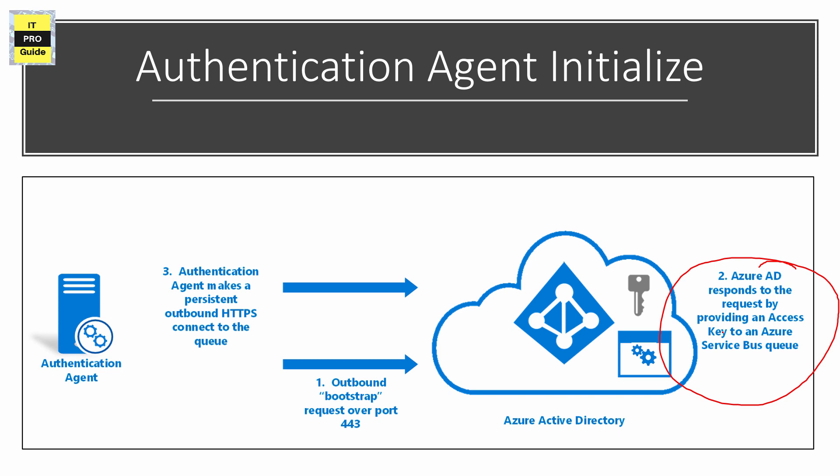Azure Active Directory responds by providing an access key to the Azure Service Bus that is unique to your tenant, identified by your tenant ID. The authentication agent installed on-premises then makes a persistent, continuous outbound HTTPS connection to the queue. So there is a continuous outbound connection between the authentication agent and Azure AD for your tenant. Importantly, Azure AD does not make any inbound connection — only a persistent outbound connection exists initiated by the authentication agent.